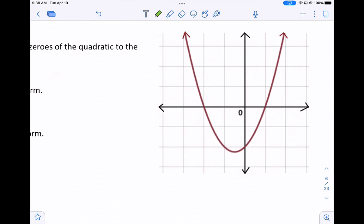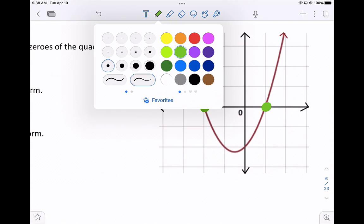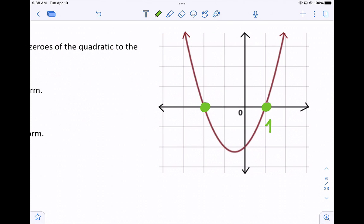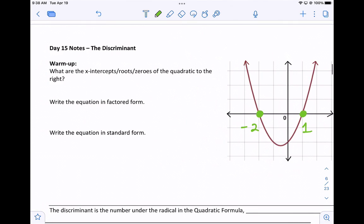So if we take a look at this equation, the x-intercepts are where it crosses the x-axis. So there's two of them. One of them is at x equals 1, and one is at x equals negative 2.